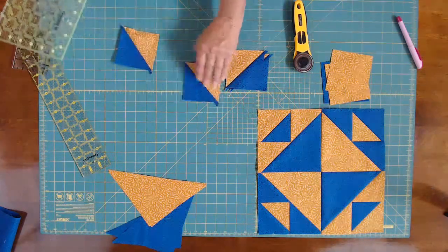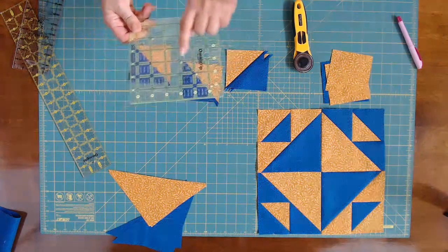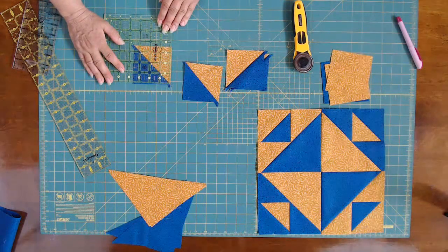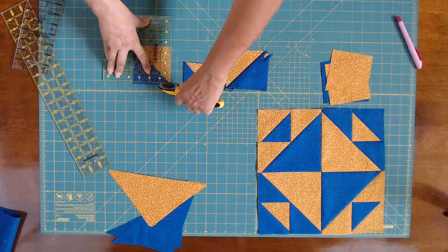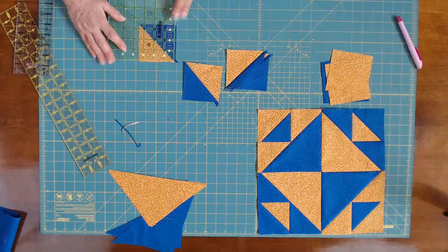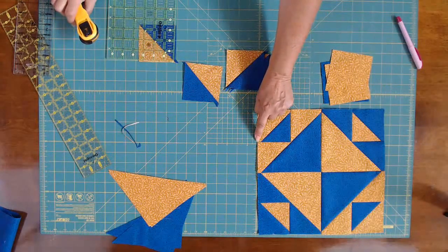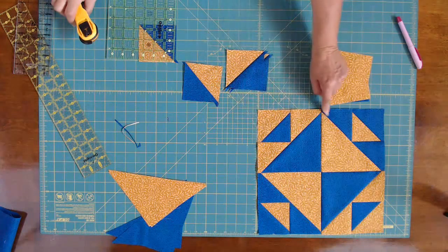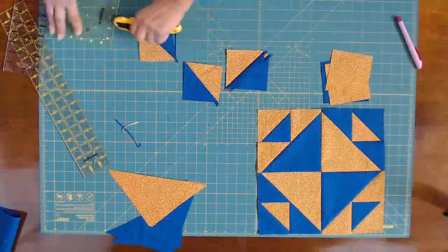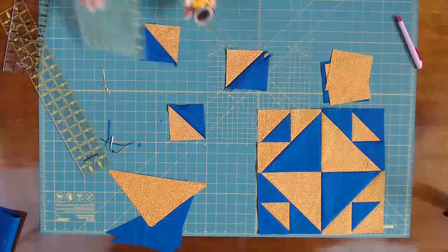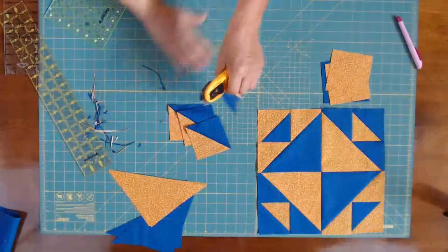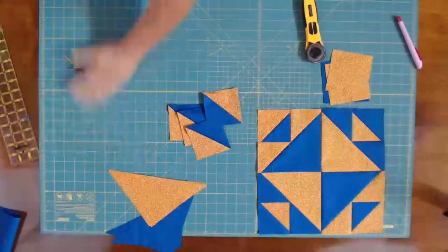These have now been pressed and what I'm going to do is I'm going to square them up. I'm going to use the diagonal line on my ruler and I'm going to place that on my seam. These units should be three and a half inches. So as you can see, mine are a little bigger. I always make them a little bigger just so that I can do this, so that I can get that seam right there on the point. Because then what it does is it gives you a quarter inch here for your seam so that you don't lose your points. So those are all squared up and ready to go.